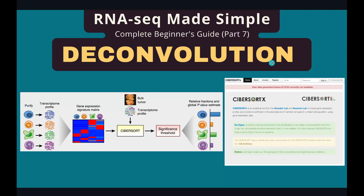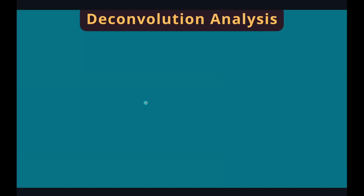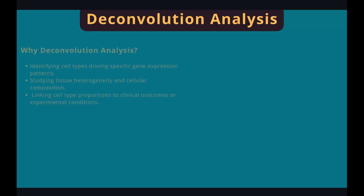So what is deconvolution analysis? It's analysis that estimates the cell type composition in a bulk RNA-seq dataset, which averages gene expression across all cell types. The algorithm requires a reference signature matrix to estimate the proportion of cell types in your bulk tissue. We need it to identify cell types driving specific gene expression patterns, to study tissue heterogeneity, or to link cell proportions to clinical outcomes.